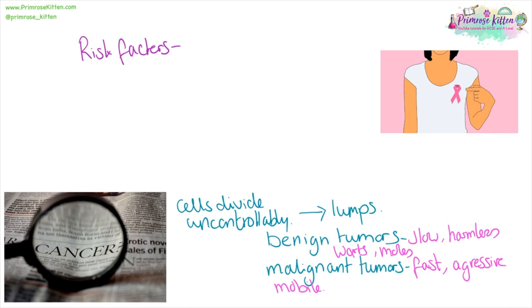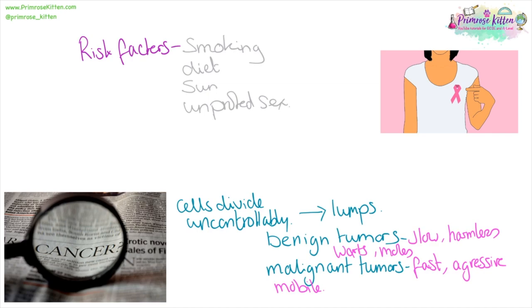There are also risk factors involving cancer and there are a lot of things that we are in control of. Smoking has large implications in lung cancer. Diet — a good diet can reduce your risk of bowel cancer, whereas if you don't eat much fruit and vegetables you are putting your bowel at risk. The amount of time you spend in the sun can affect your susceptibility to skin cancer. And unprotected sex can leave you at risk of cervical cancer.